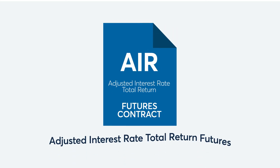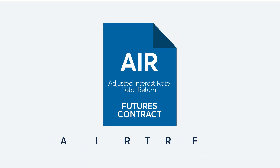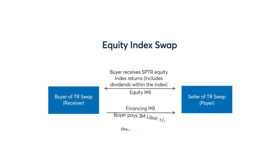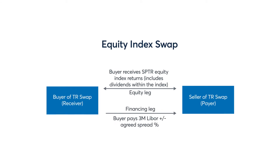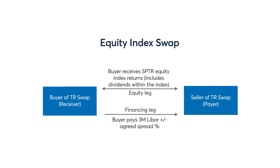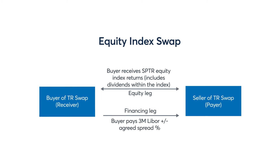Adjusted Interest Rate Total Return Futures, or AIR TRFs, provide a total return exposure with an overnight floating rate built in. AIR TRFs replicate the economics of an equity index swap, but offer the benefit of a listed and centrally cleared futures contract.